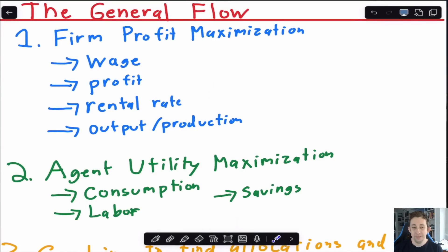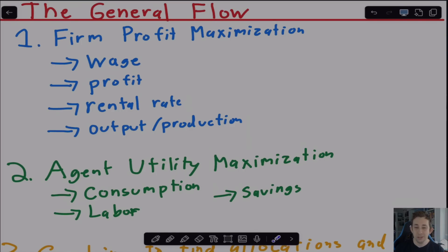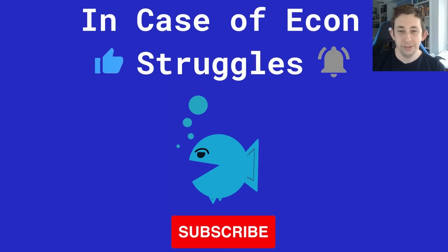Some of you might find it easier to solve the social planner problem first, find the Pareto set and Pareto optimal allocation, and then worry about prices and find equilibrium. There's a lot of flexibility in how you solve it. As I go through example problems, if you disagree or think there's a better way, feel free to put that in the comments so we can discuss pros and cons of different approaches. Please leave a comment if you'd like to see more of these videos, and if they're helping you out, please like and subscribe. We'll see you next time for another case of econ struggles.